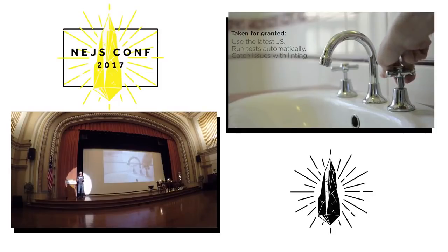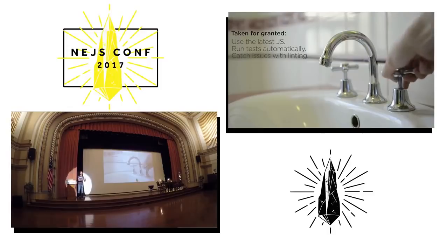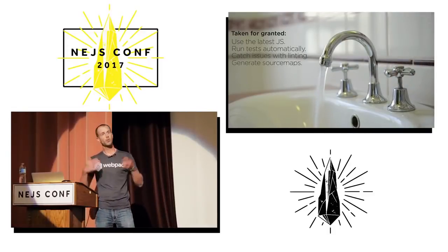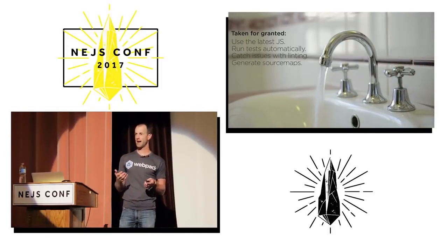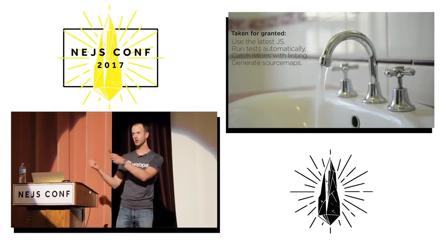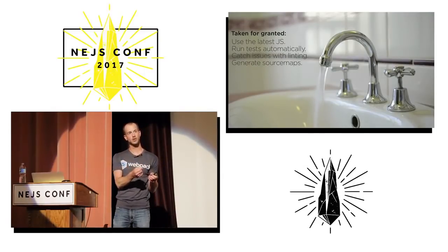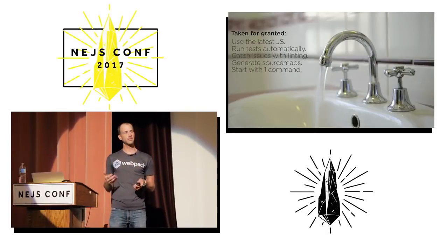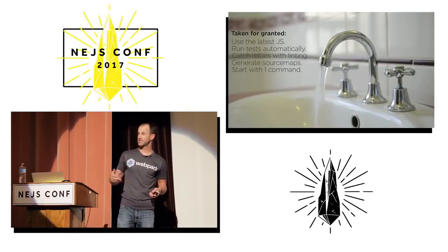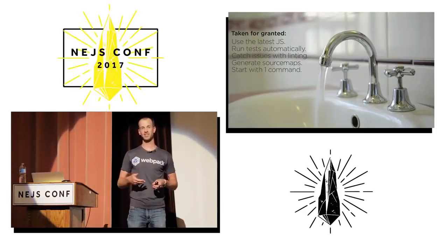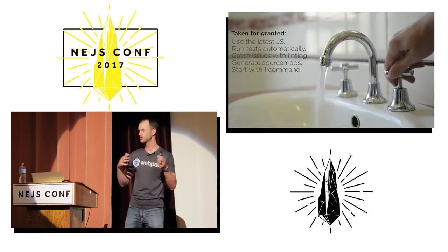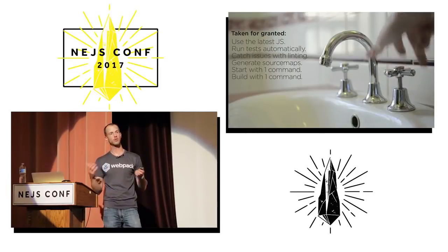We know our code reviews go really fast now because most of the things we look for are caught by linters instead of manually on a case-by-case basis. We know that when we get to production we'll be able to use source maps to debug our code even though we're transpiling — we'll be able to see our original code in production. We can start our application with one command: when somebody joins my team, you clone the repository, you say `npm start`, and magic happens.